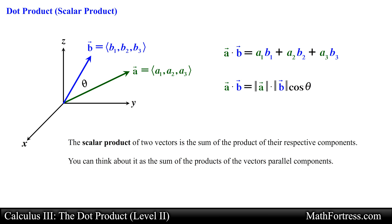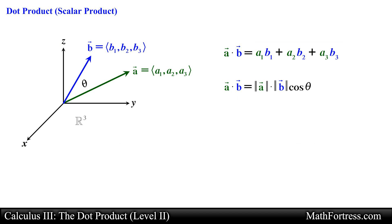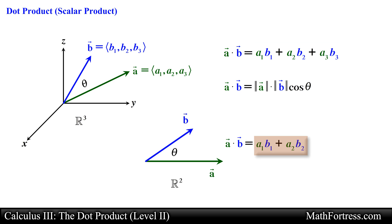We now have two distinct ways to calculate the scalar product between two vectors: we can use the geometric interpretation, or if the components of both vectors are known, we use the component form. Notice that both methods produce a scalar, not a vector. Although we derived the component form for three-dimensional vectors, the dot product of planar or two-dimensional vectors is defined similarly — simply remove the z component.